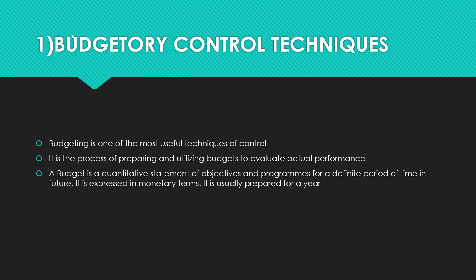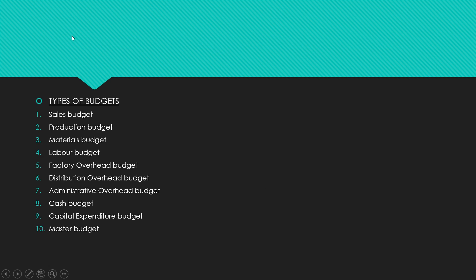Budgeting is one of the most useful techniques of control. It is the process of preparing and utilizing budgets to evaluate actual performance. A budget is a quantitative statement of objectives and programs for a definite period of time in future, expressed in monetary terms, usually prepared for a year. The types of budget: first, sales budget — prepared by the sales manager; it is an estimate of expected sales during a budget period, and is the backbone of the enterprise, the starting point on which other budgets are based.